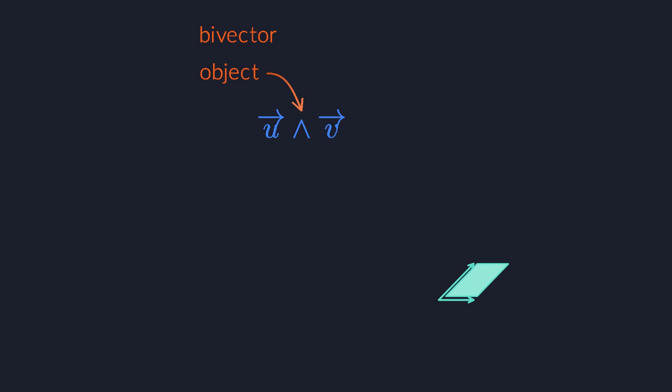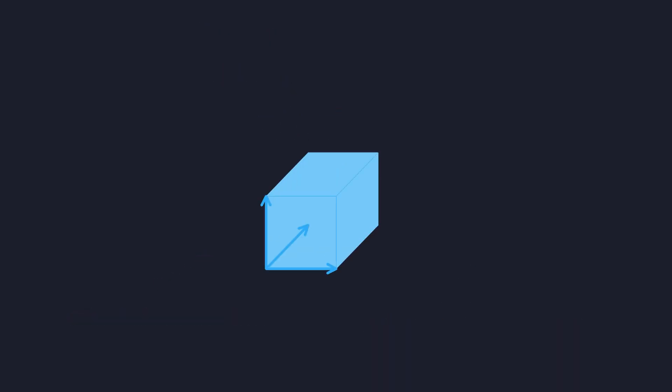In the same way that a geometric vector, an arrow, is like an oriented line segment, bivectors are oriented plane segments. We can even wedge more than two vectors together to create oriented volume elements and higher dimensional hypervolume elements. This gives us a lot of new objects that we can play with.